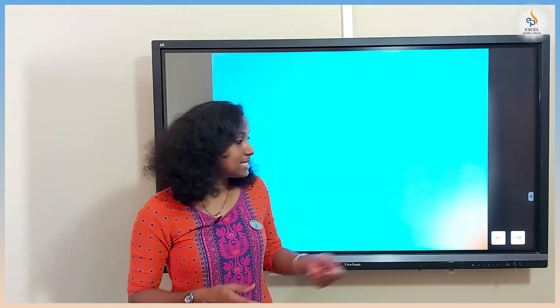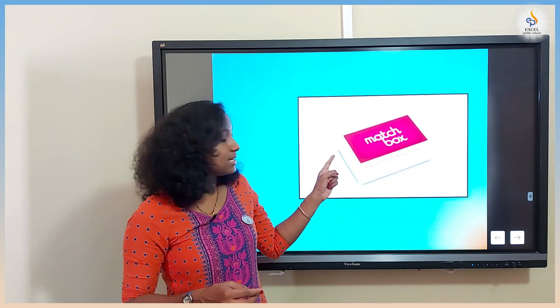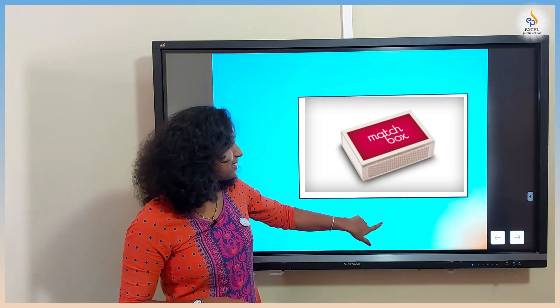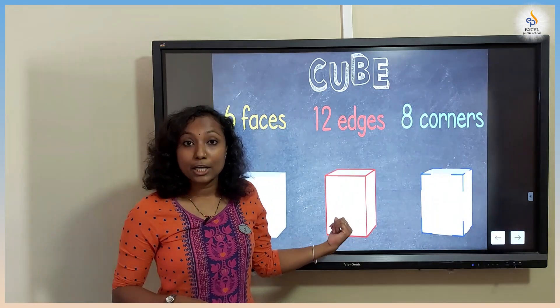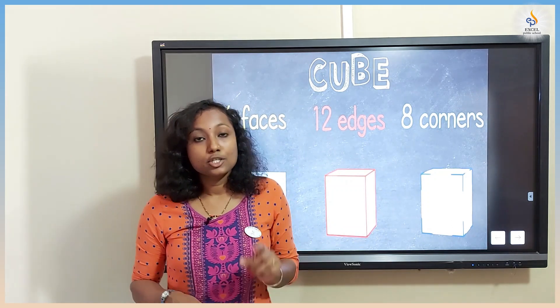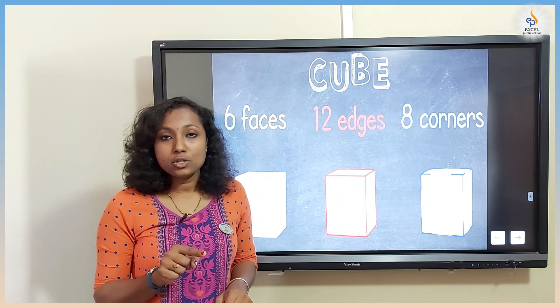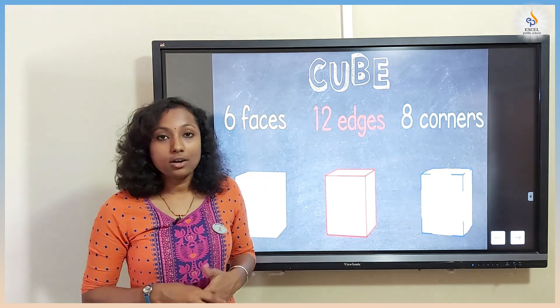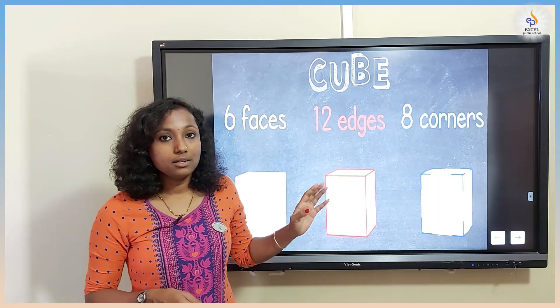I also heard that you learned a few attributes of 3D shapes, so shall we all recall what you have learned? I will show you a few pictures — you have to guess which 3D shape it is. The first picture is a matchbox. Can you guess which 3D shape that is? Yes, it is a cuboid. The next picture is a dice. Which 3D shape is that? Yes, it is a cube. A cube has six faces, 12 edges, and eight corners. The cuboid also has six faces, 12 edges, and eight corners. These are the attributes of cube and cuboid.